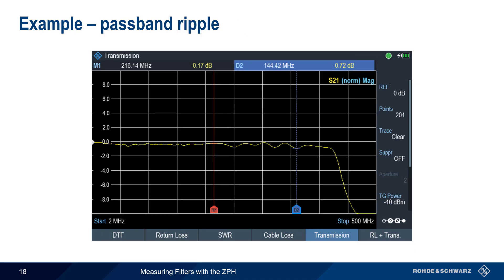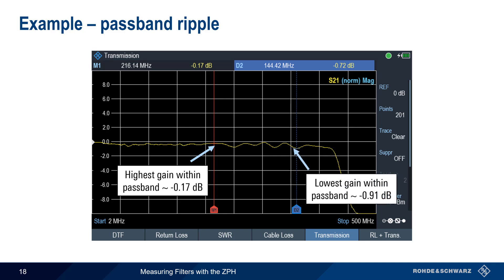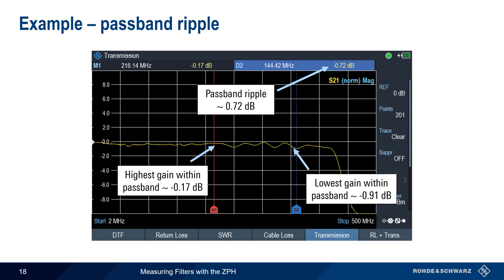The last basic measurement we'll look at is pass band ripple, or how much amplitude variation there is within the pass band. Here we're looking at a low-pass filter with a 3 dB cutoff frequency of about 428 MHz. The highest gain within this pass band is minus 0.17 dB at about 216 MHz, and the lowest gain is minus 0.91 dB at about 300 MHz. Using a delta marker between these two points, we can directly read off the pass band ripple, which for this filter is approximately 0.72 dB.